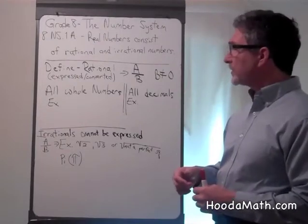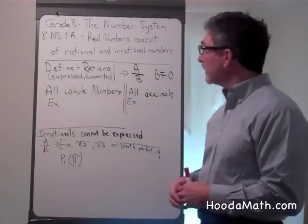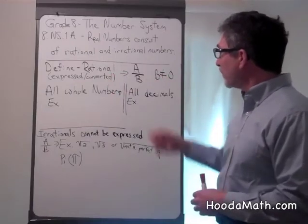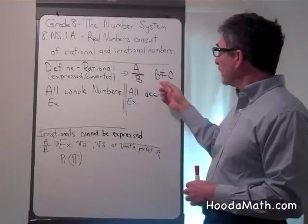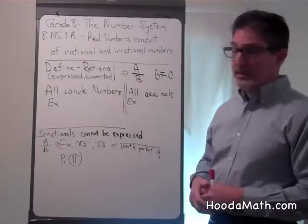Rational numbers can be expressed or converted into a ratio or fraction, a over b, where b is not zero, because we cannot divide by zero.